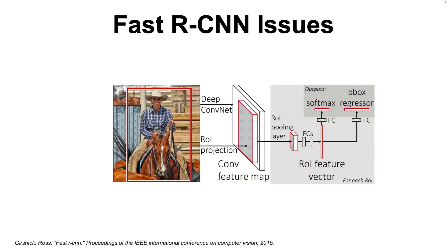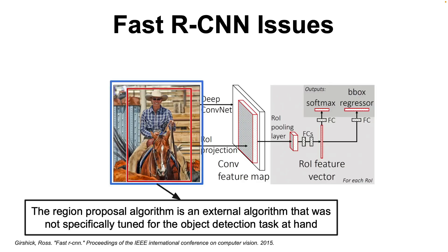However, although Fast R-CNN is faster than R-CNN, it still has one major drawback: the region proposal algorithm. The region proposal algorithm used in Fast R-CNN is an external general method and is not optimized for the object detection task we are trying to solve.